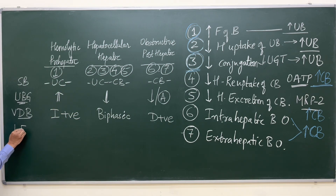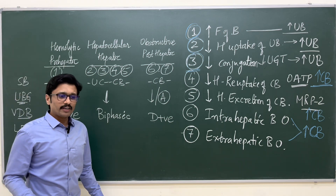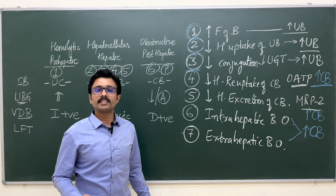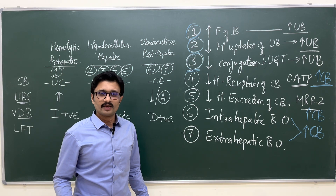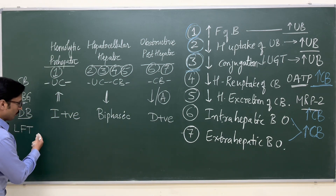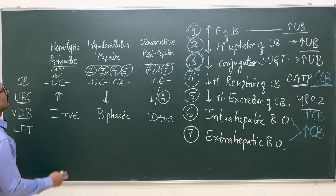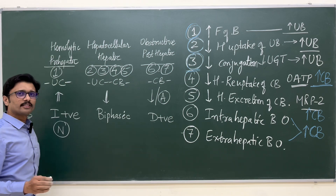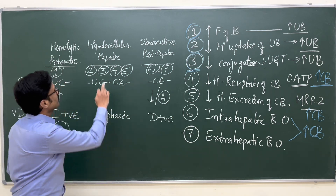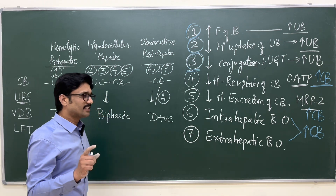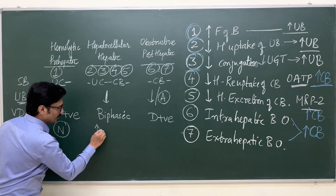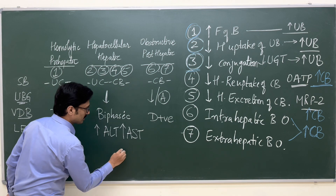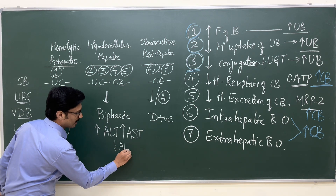Next is liver function test. When you do liver enzyme assays — alanine transaminase, aspartate transaminase, alkaline phosphatase — what variations do you find in these three types of jaundice? In case of hemolytic jaundice, liver function test will be absolutely normal because the liver is functioning normally and is healthy. In case of hepatocellular jaundice, there is damage to the hepatocytes, so there is increase in alanine transaminase, increase in aspartate transaminase, and also some increase in alkaline phosphatase, but it can be even normal.